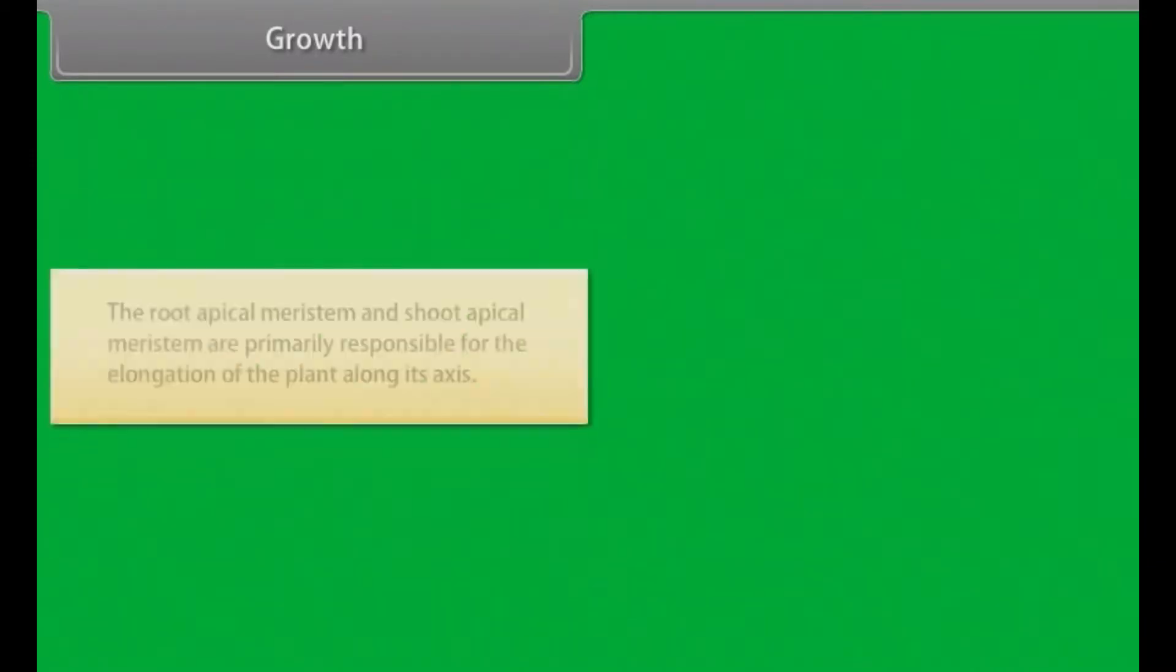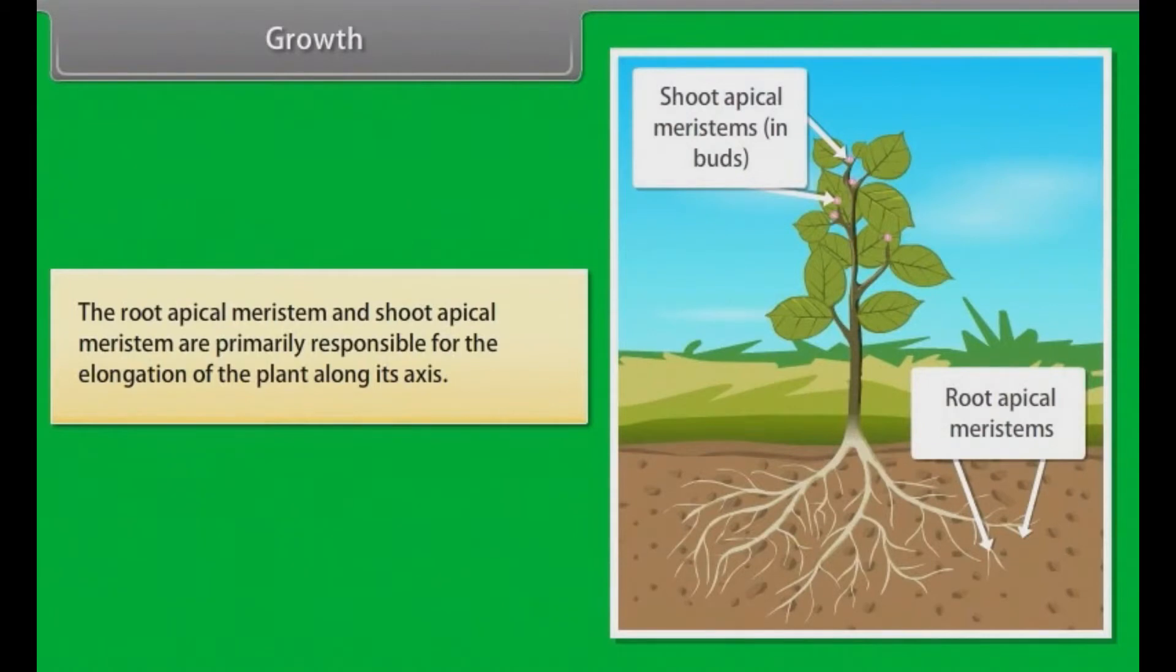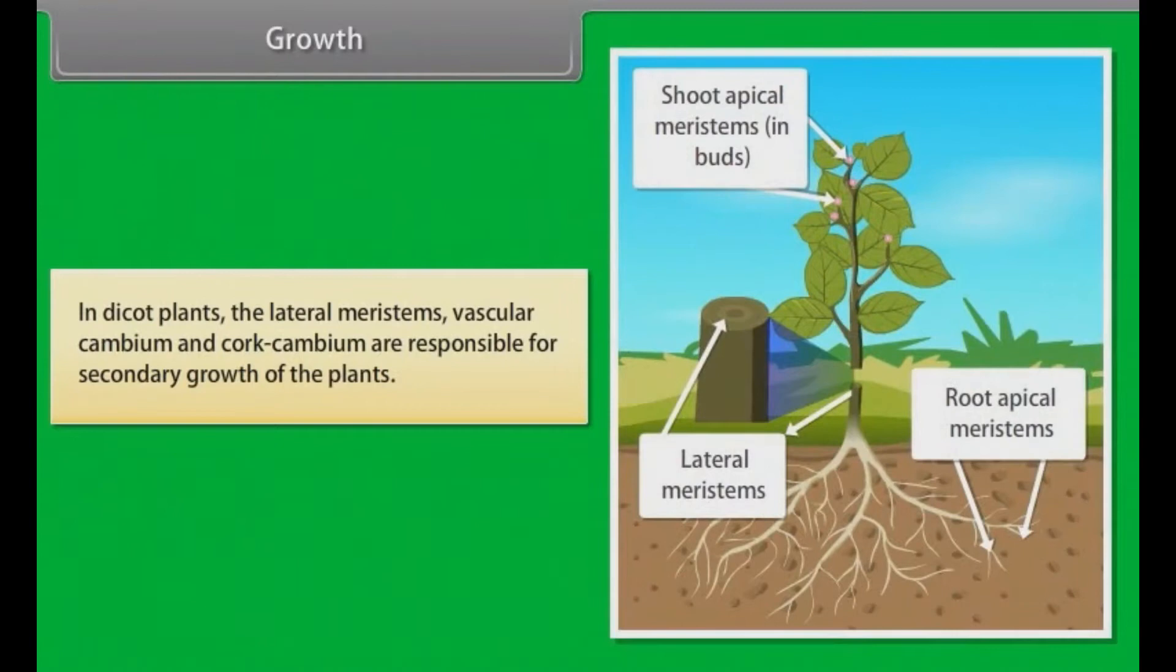The root apical meristem and shoot apical meristem are primarily responsible for the elongation of the plant along its axis. In dicot plants, the lateral meristems, vascular cambium and cork cambium are responsible for secondary growth of the plants.